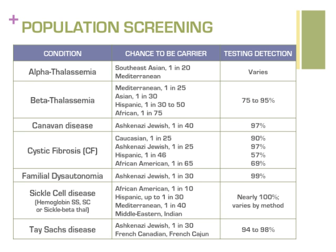Carrier screening for autosomal recessive conditions is typically offered based on a patient's ethnic background or family history. These conditions have been identified to be more common in different areas of the world. This table lists some of the most common autosomal recessive conditions and their corresponding ethnic groups who have the highest chance to be carriers. However, these conditions are not exclusive to these groups. Family history should also be considered. Please let your provider know if someone in your family to whom you are blood-related is affected by one of these conditions, even if you're not from an area of the world where it's most common.